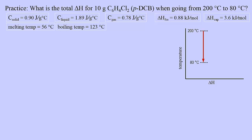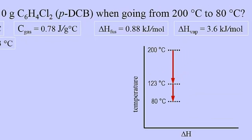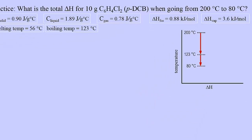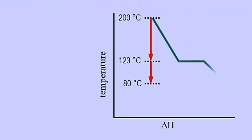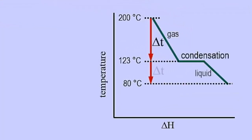First, let's draw a graph to determine where each delta H is occurring. We see from the data provided that boiling occurs at 123°C. Our starting temperature is above that, so the paradichlorobenzene is starting out as a gas. As heat energy is lost, the temperature decreases to 123°C. The gas will condense to a liquid — the boiling point is the same as the condensation point. So there will be a phase change at 123°C from gas to liquid. The next phase change occurs below 80°C, which we will not reach, so that can be ignored.